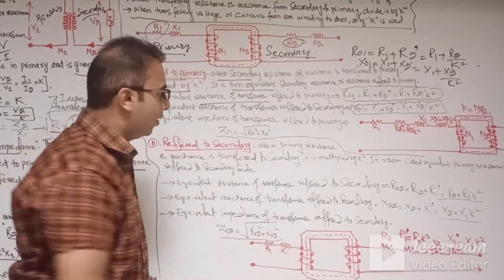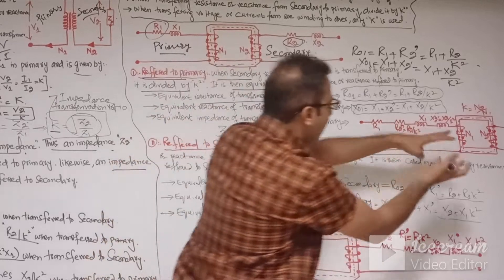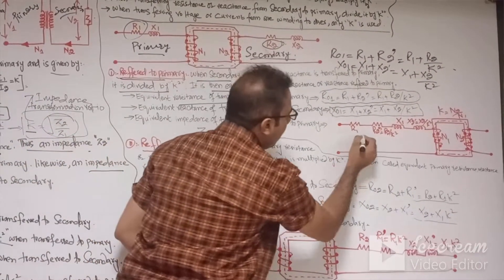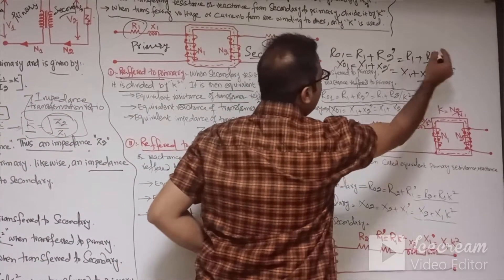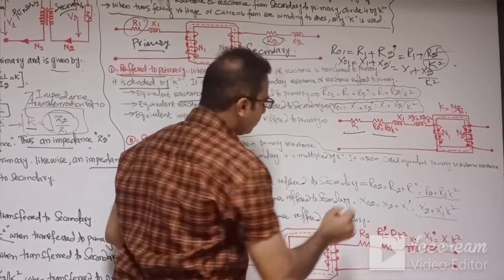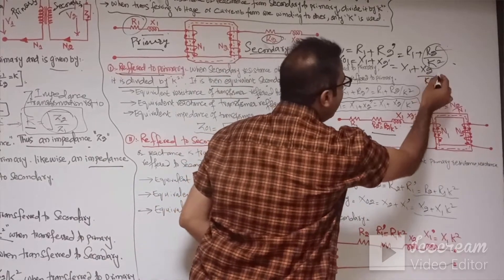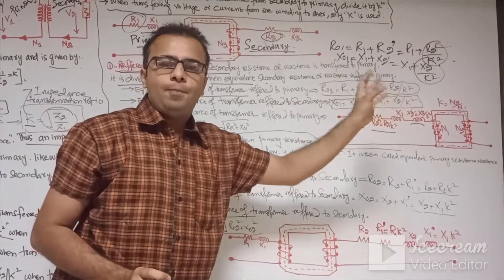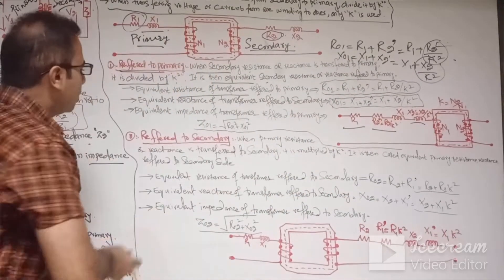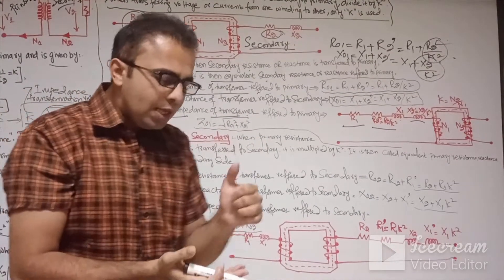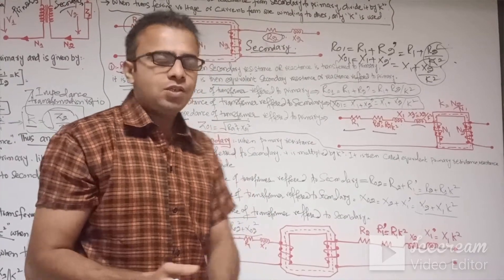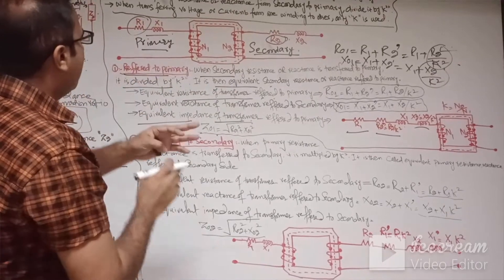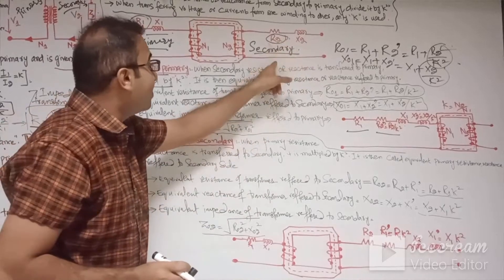The equivalent circuit now has the secondary side open, with all reactance and resistance components shifted to the primary side. So the equivalent circuit shows R1 and R2' = R2/K² for resistance, and X1 and X2' = X2/K² for reactance. The equivalent impedance of the transformer referred to the primary side is Z01 = √(R01² + X01²).